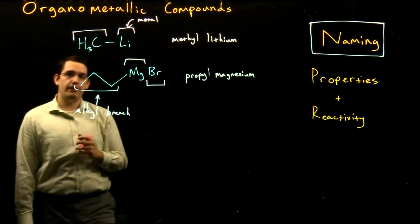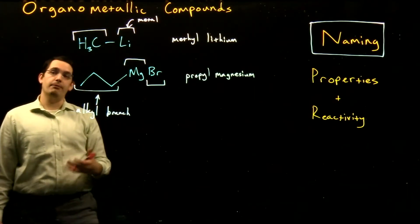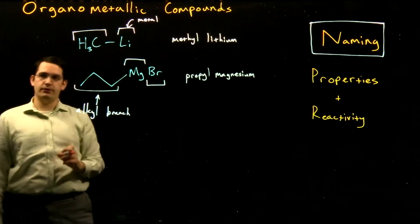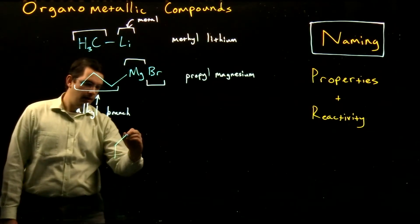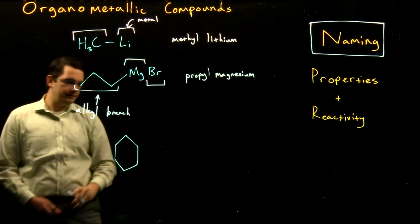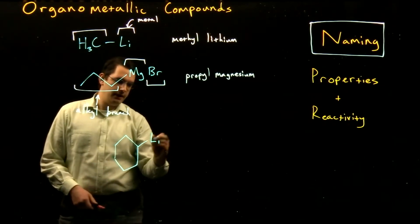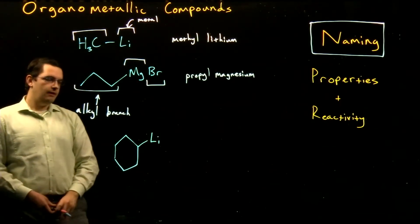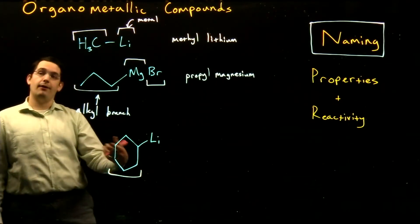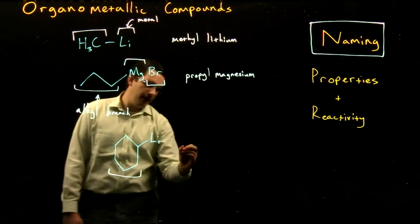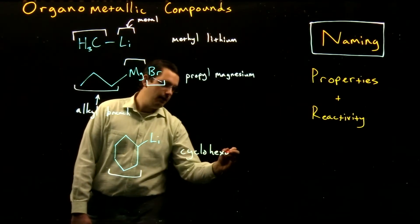Our lithium compound is complete at this point. We have methyl lithium describing the full structure of our organometallic compound, and of course we can use that for larger organolithium compounds as well. For example, we can have our structure with a cyclohexyl group and lithium attached — so this would be cyclohexyl lithium.